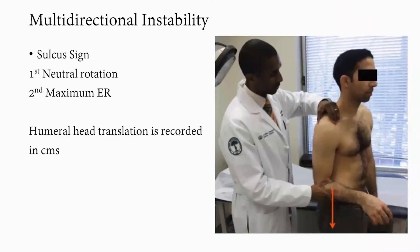For multi-directional instability testing, in the seated position a downward pulling force is applied to the elbow in neutral rotation, and the distance the humeral head translates below the acromion is observed — this is the sulcus sign. The test is repeated in maximal external rotation. If the sulcus sign persists in maximum external rotation, this indicates rotator interval incompetence.